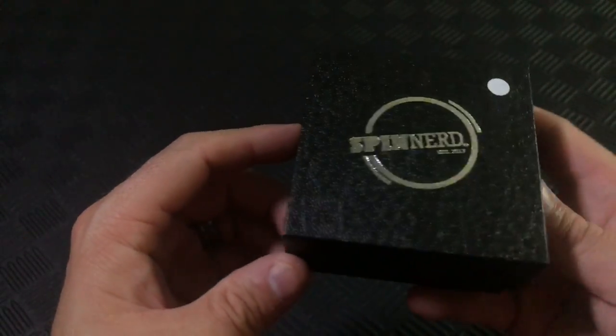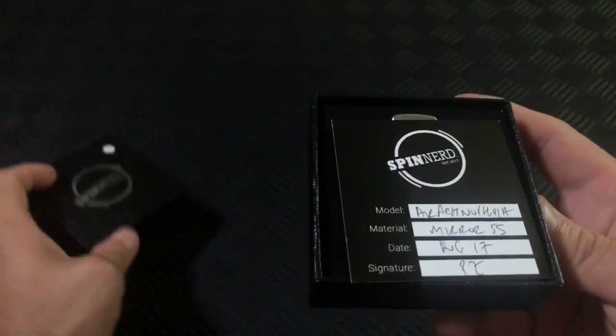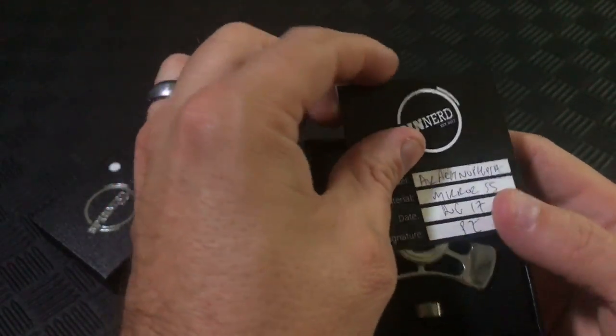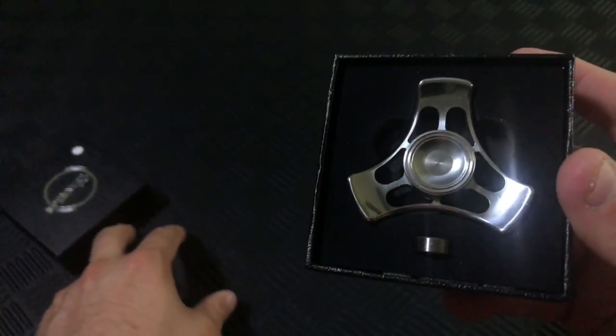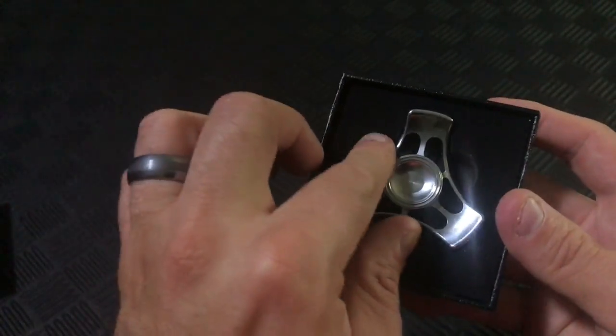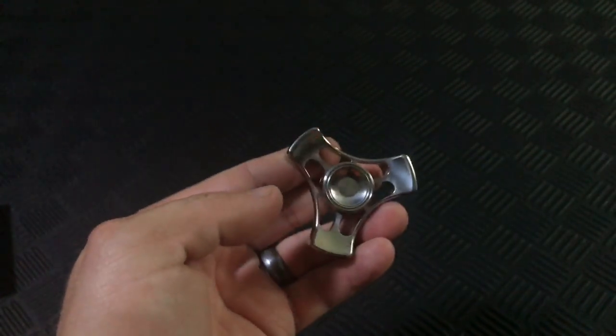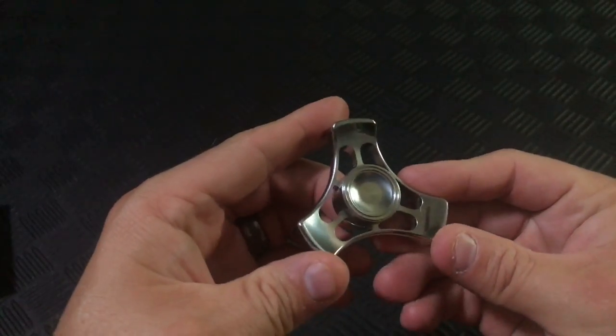And so it arrived in this nice gift box. Inside it has the Certificate of Authenticity, an extra stainless steel R188 bearing, and of course the beautiful Arachnophobia. This is the mirror polished stainless steel version, but it also comes in matte black and media blasted.